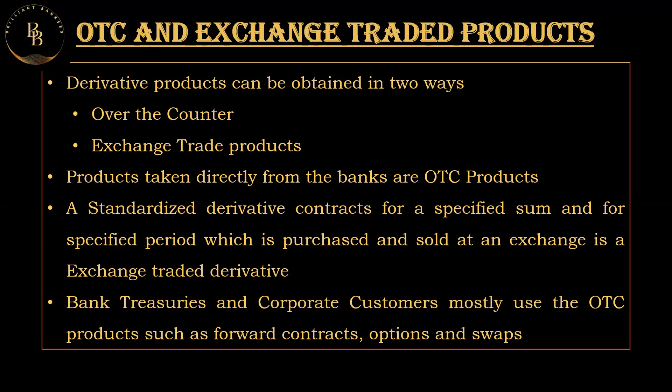In treasury management, imagine buying a rare collectible directly from a friend — no public auction or store. You negotiate directly for the price and make the deal. In finance, OTC financial products are traded directly between two parties outside a central exchange. This includes OTC stocks, bonds, and derivatives, which are often customized to meet the specific needs of the parties involved.